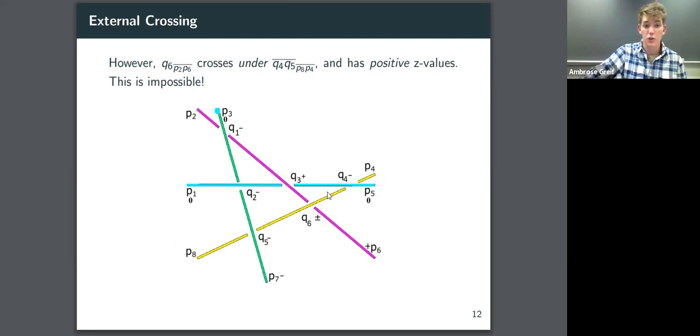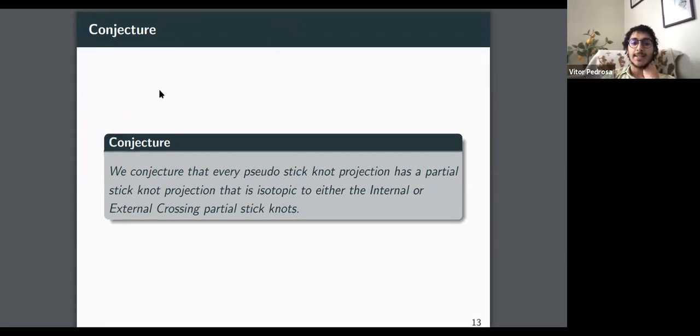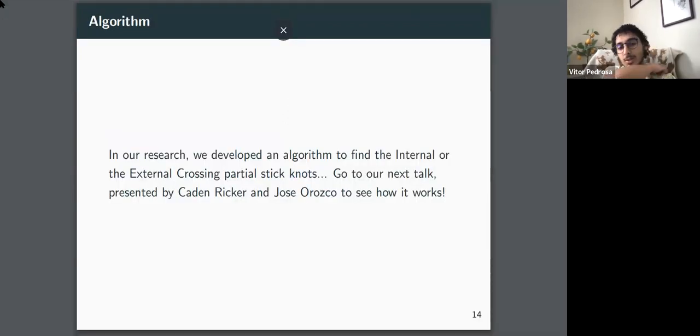So now I'm going to hand it off to Vitor and he'll finish this off. Thank you, Ambrose. As mentioned before, we conjecture that every pseudo-stick knot projection has a partial-stick knot projection that's isotopic to either the internal or the external crossing. So no matter how many sticks you have, if either of those partial-stick knots appear in the collection, we conjecture that it's going to be pseudo as well. Next slide. So in our research, we also developed an algorithm which helps you find the internal and the external crossing. If you go to our next talk, presented by Kayden Ricker and Jose Orozco, you can see how it works. That should be tomorrow at 11 a.m.